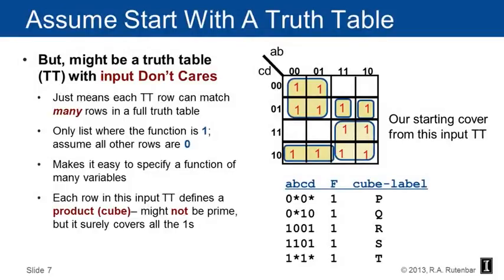We're starting with a truth table that can have input don't cares, meaning each row can match many rows of the full truth table by allowing an asterisk, which means you can match either a zero or one. On the truth table shown, there are five rows that each turn into a cube, called p, q, r, s, and t respectively. The Karnaugh map shown is a four-by-four grid with A, B on the top and C, D on the left.